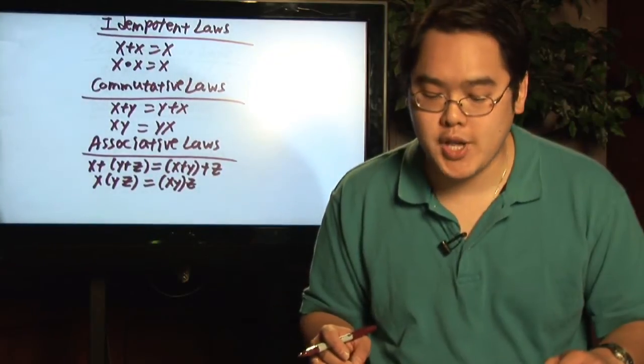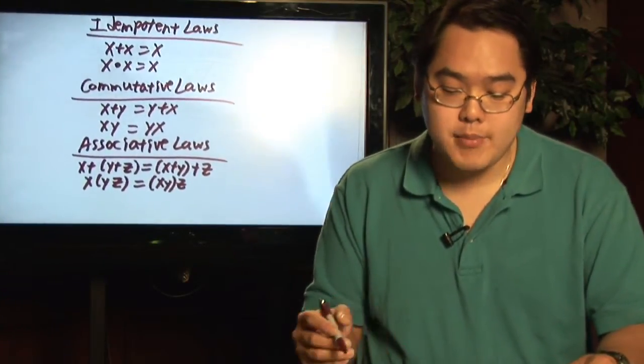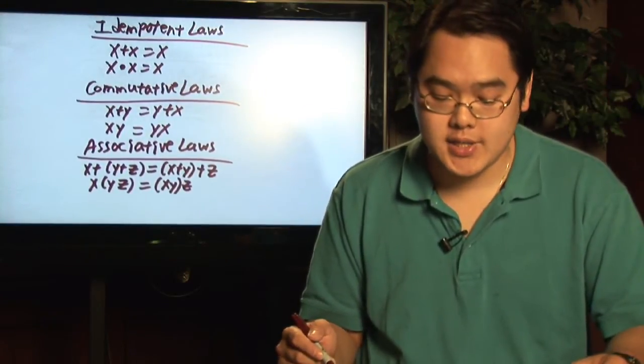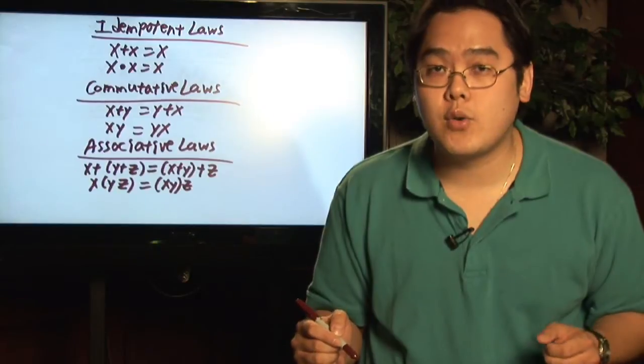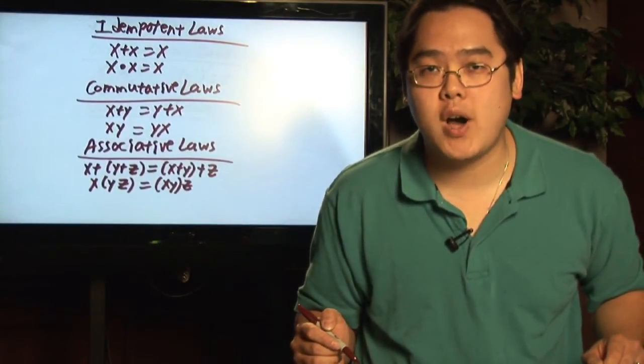So here are some laws involving Boolean Algebra. We have first the idempotent laws: x plus x is equal to x, x times x is equal to x. The commutative laws are pretty straightforward as regular algebra: x plus y equals y plus x, and xy equals yx.